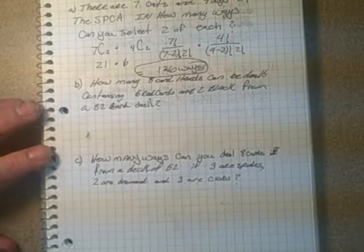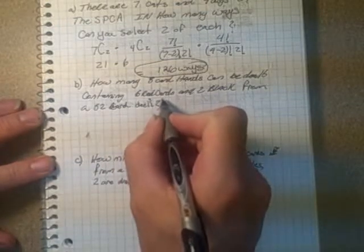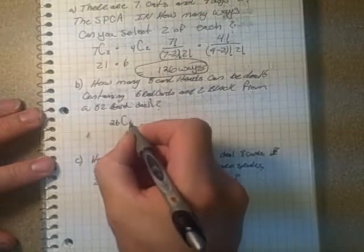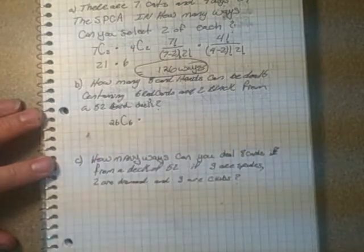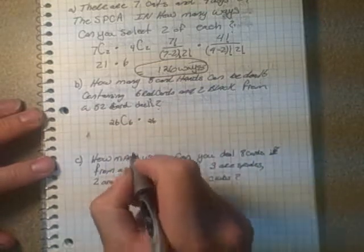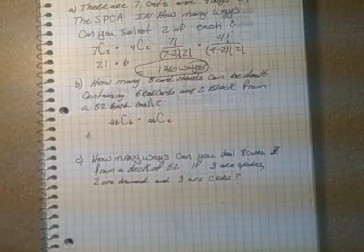We're going to select 6 cards from a possible 26 that are red. So that's 26C6 times the black cards. There's a possible of 26 black cards, but we're not selecting 6, we're only selecting 2. So that's 26C2.